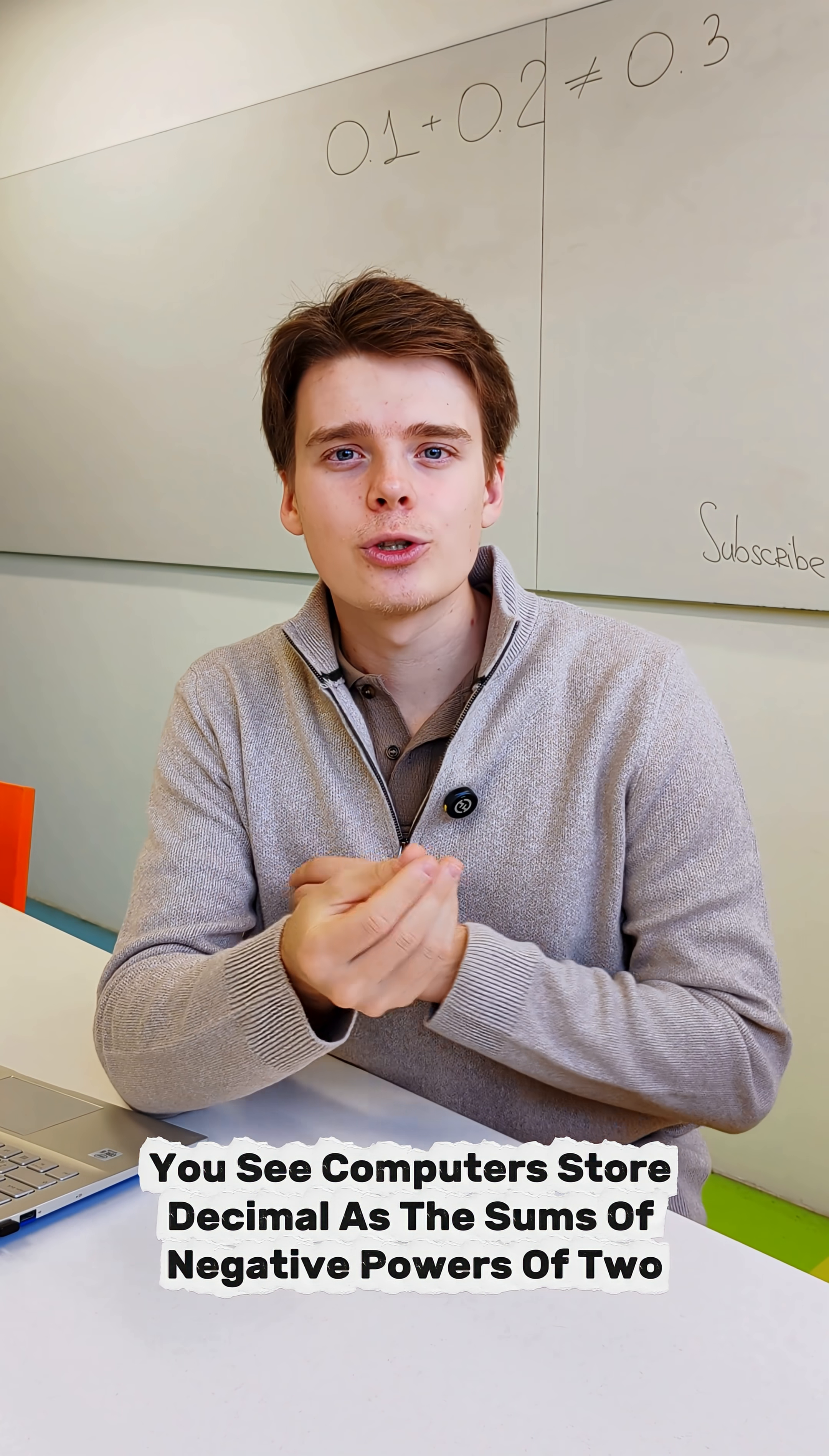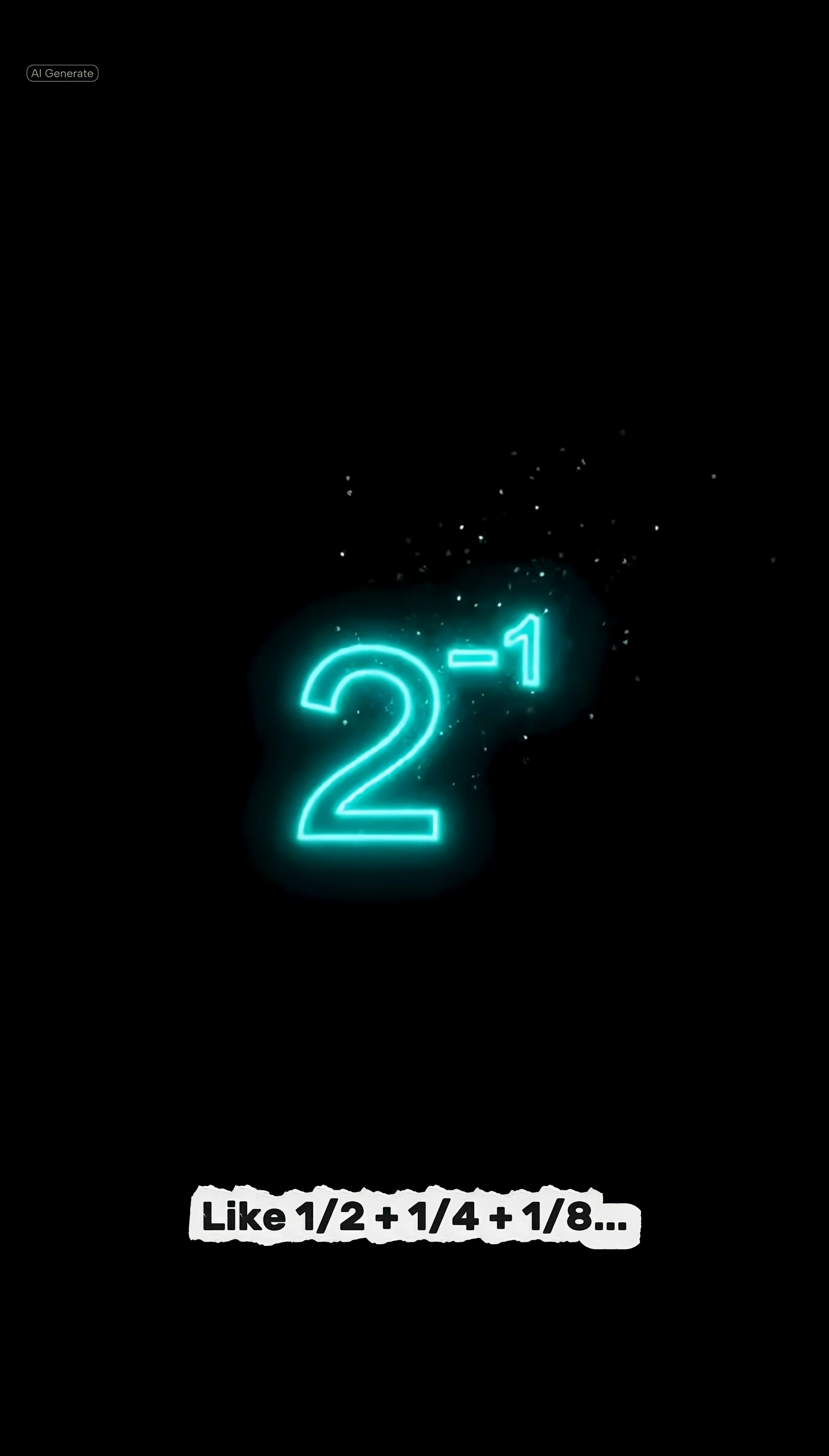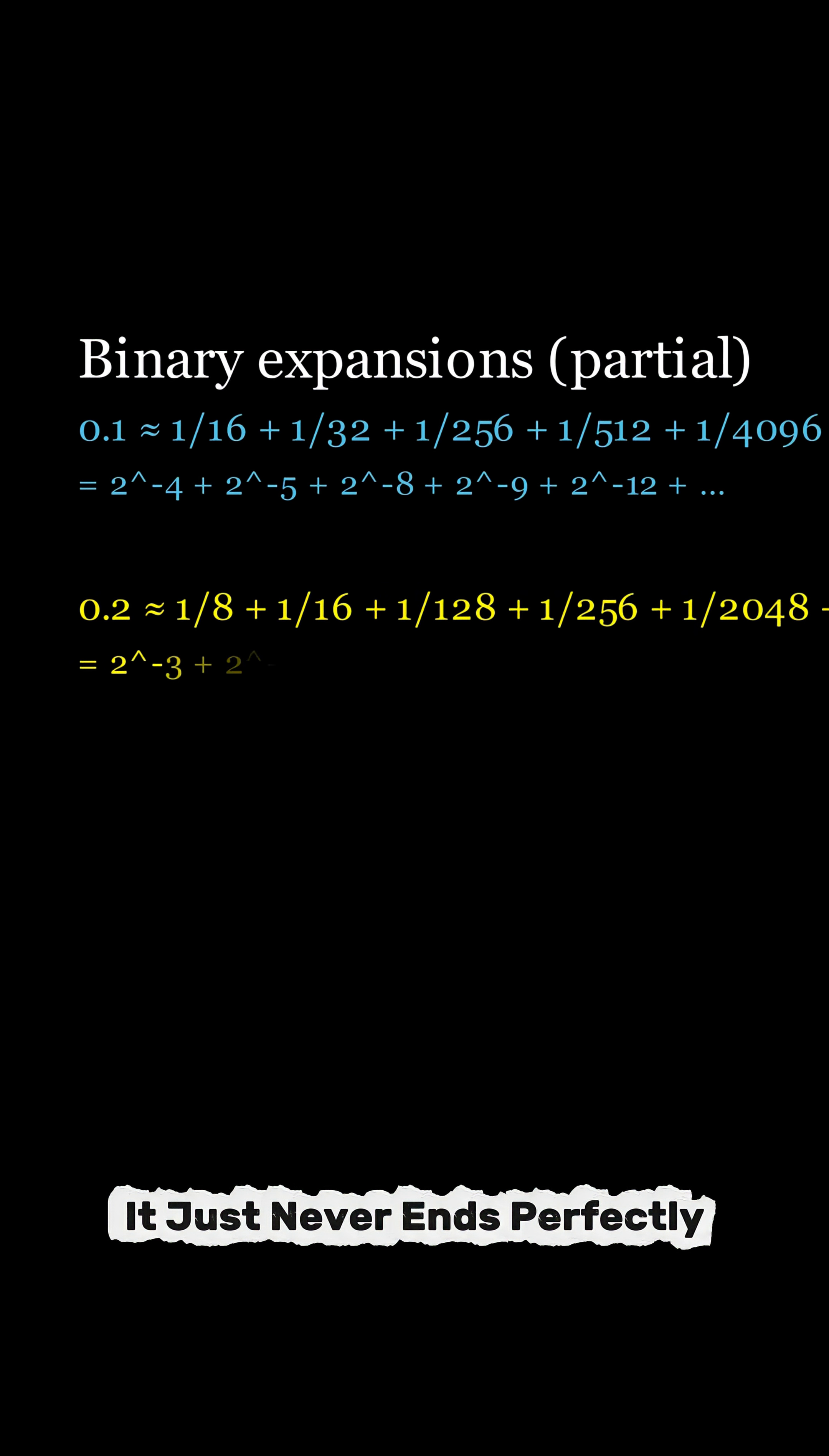You see, computers store decimals as the sums of negative powers of 2, like 1 half plus 1 quarter plus 1 eighth, and so on. So 0.1 is approximately 1/16th plus 1/32nd plus 1/256th, and so on. It just never ends perfectly.